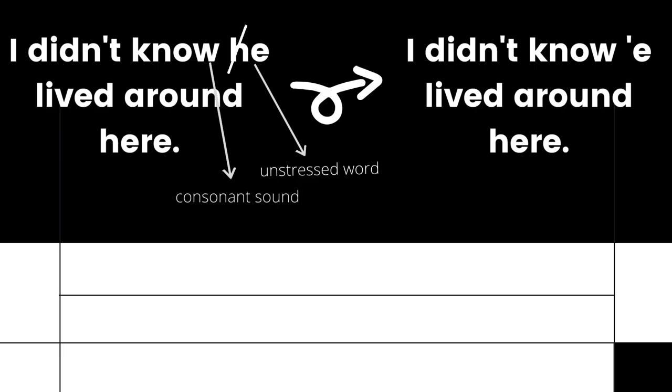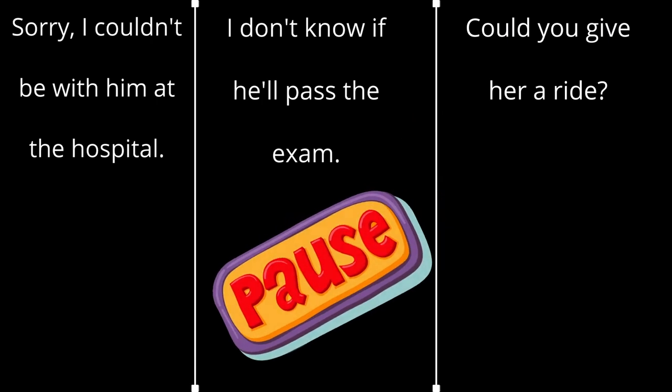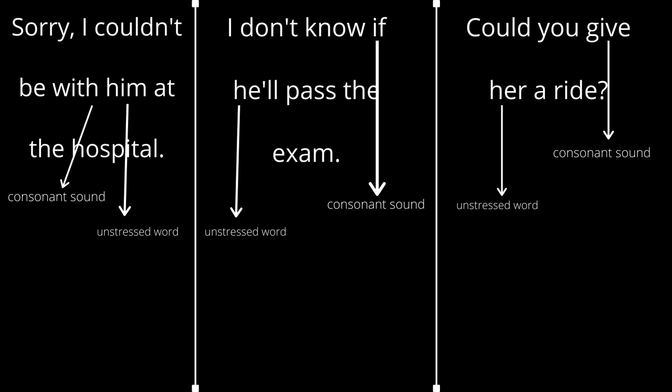Now you will have a practice. Identify where the elided H sound occurs in these three sentences, then practice saying them. The first sentence: 'Sorry, I couldn't be with him at the hospital.' The elided H occurs with the word 'him,' because 'him' is unstressed and the word before it, 'with,' ends in a consonant sound. So we do not say 'him' — we say 'him.' Sorry, I couldn't be with him at the hospital.